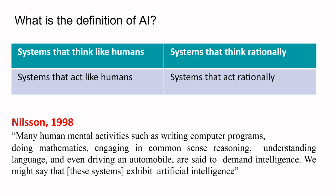So solving mathematical problems, engaging in common sense reasoning, understanding language, or driving a car — to perform these activities we need intelligence. If these processes or functions are happening automatically, then we can say that these systems exhibit artificial intelligence and are artificially intelligent.